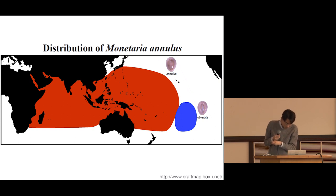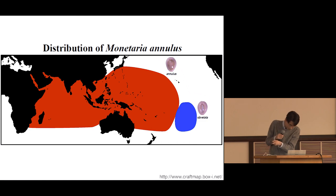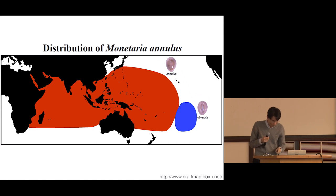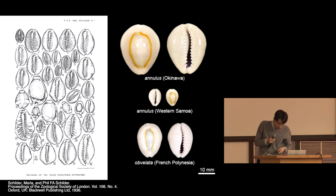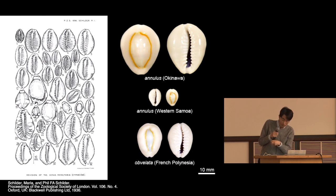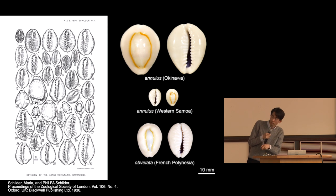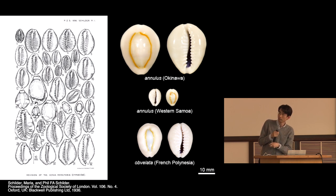The gold ring cowry, Monetaria annulus, is distributed across the Indo-Pacific region. The subspecies Monetaria annulus ovulata is endemically found in French Polynesia. These photos are Monetaria annulus shells collected from different localities. The top and middle specimens are both Monetaria annulus, but shell size is amazingly different. The bottom one is Monetaria annulus ovulata, collected from French Polynesia.